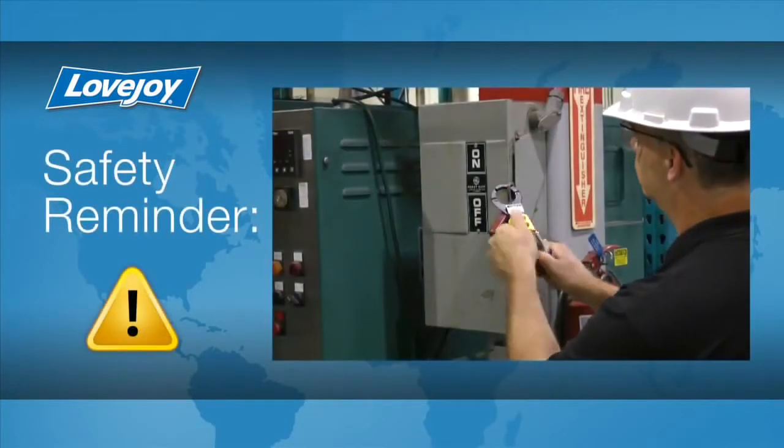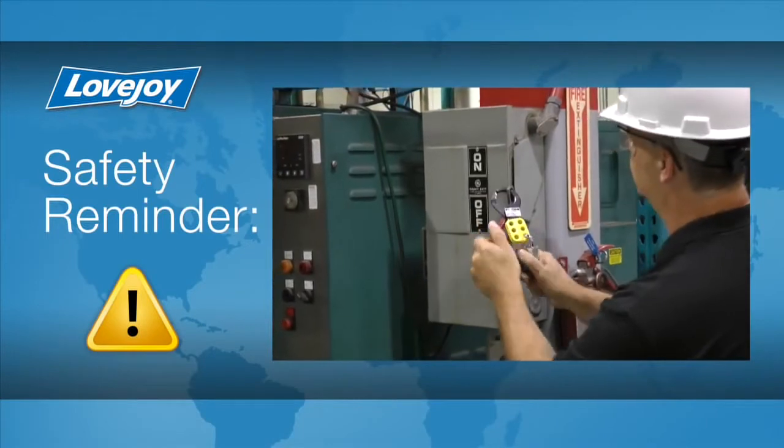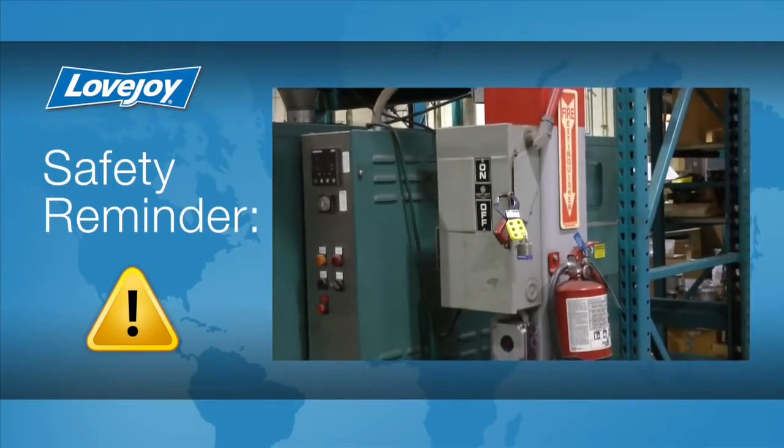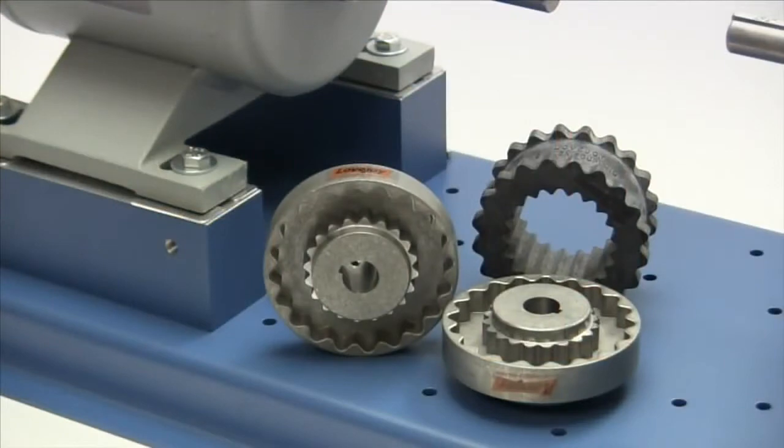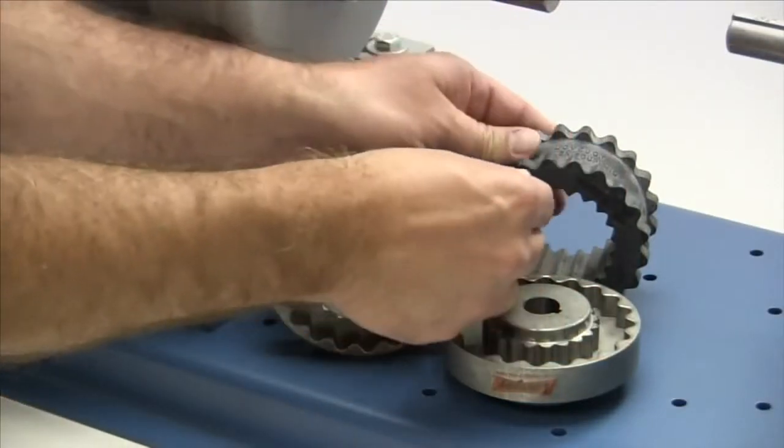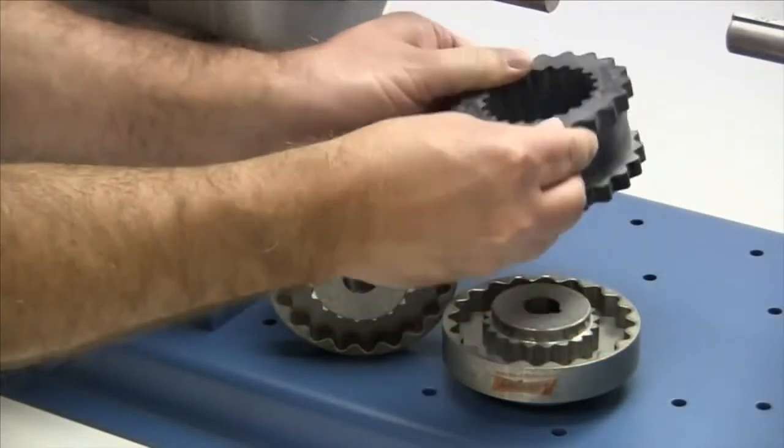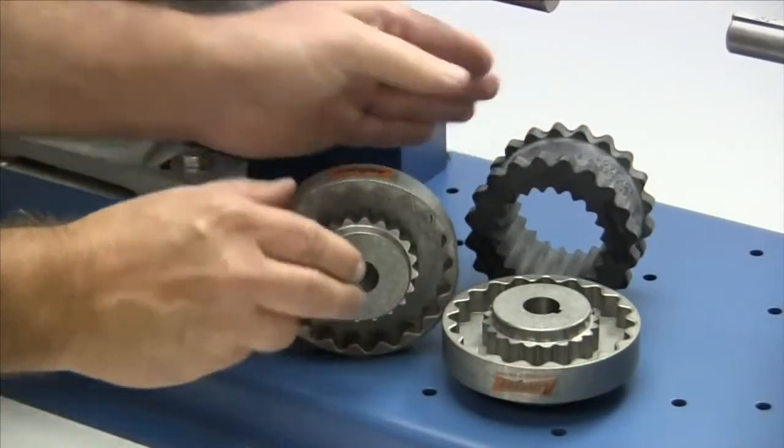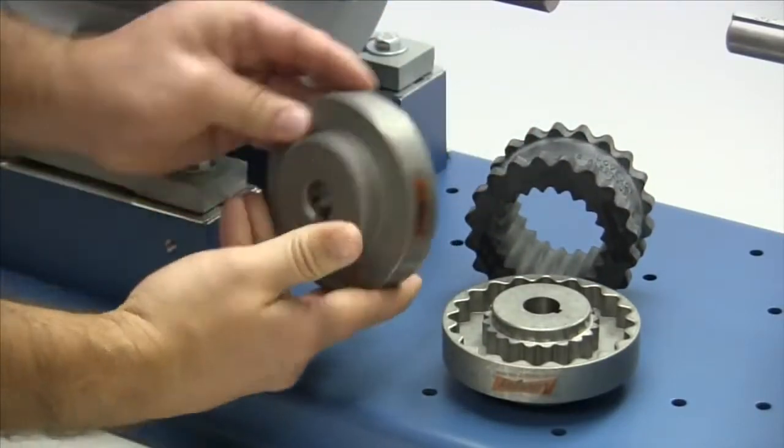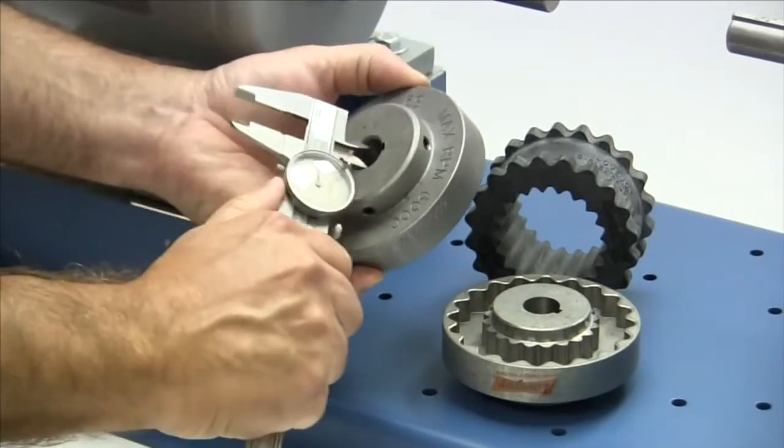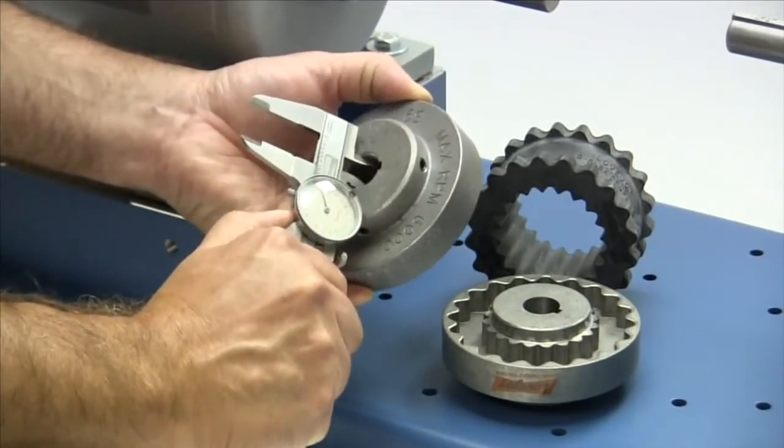Even though we have disconnected the power to this system, it is always a good idea to check and ensure that the power is off. When you receive the coupling, you should inspect each component to ensure that there are no visible defects, cracks, or damage from shipping. You may want to check the bore size for accuracy prior to continuing with the installation.